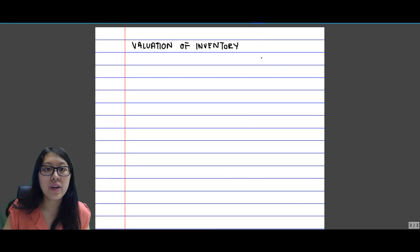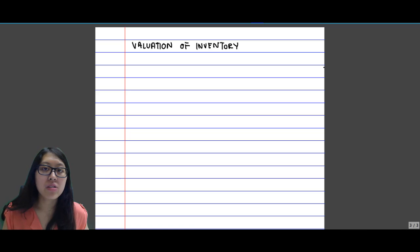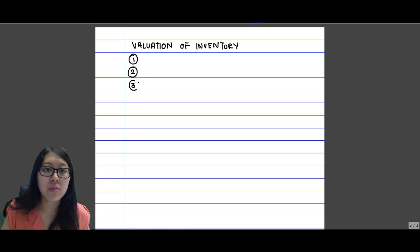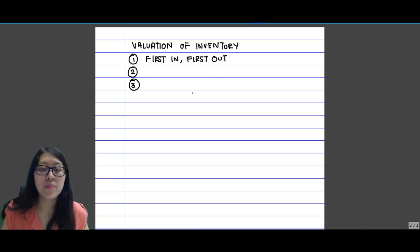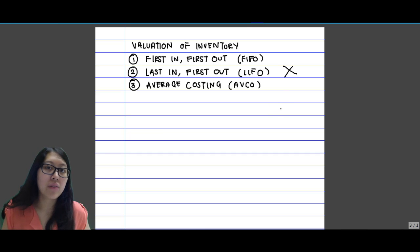Let's continue to the valuation of inventory. Inventory is still valued at the lower of cost and NRV, but how we decide the value of each unit depends on the method used. There are three methods available: first in, first out (FIFO); last in, first out (LIFO) — which IAS2 does not permit and is prohibited; and average costing, also known as AVCO. The methods we will be learning today are FIFO and AVCO. FIFO assumes that inventory received first should be sold first.